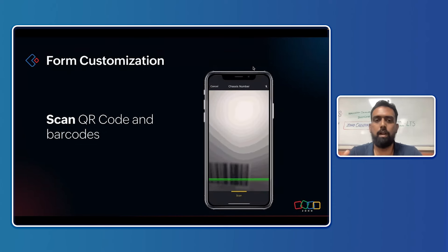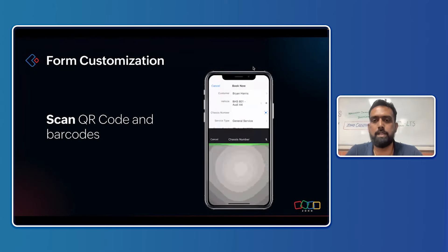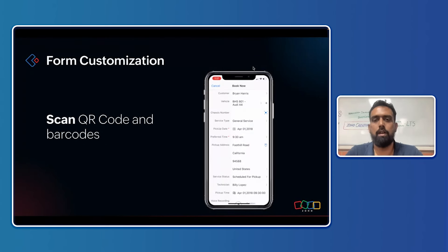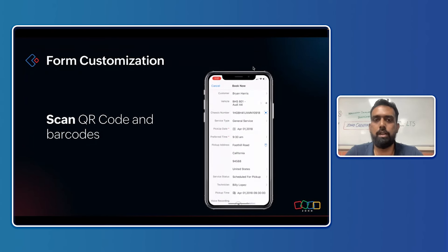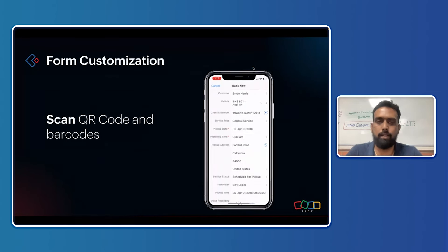For form customizations, you can scan QR codes and barcodes by simply clicking on a field — it opens the camera, the code is scanned, and the value is populated in the field. There are different fields where you can use QR codes and barcodes, and specific formats need to be followed. Documentation on supported formats and compatible fields will be shared by the co-trainer.